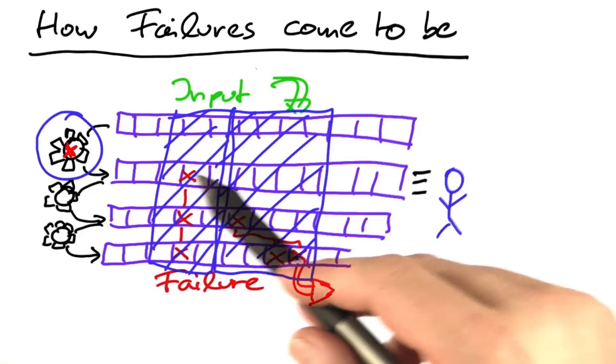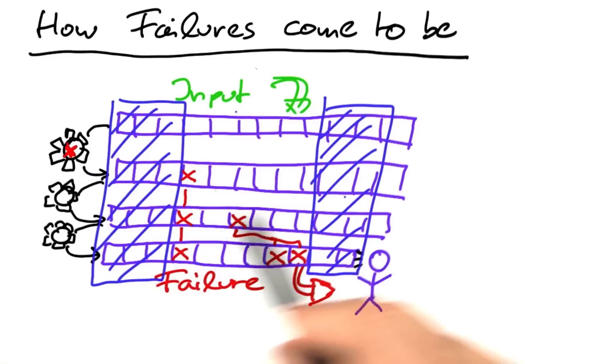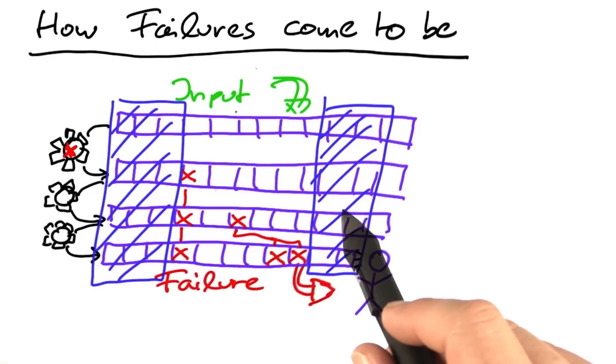The earlier you see an infection, for instance because an assertion fails, the shorter the cause-effect chain you need to investigate.